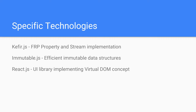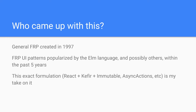The specific technologies I'm using: Kefir is the FRP library, Immutable.js is for data structures, and React is for the UI. FRP was first named and created in 1997 and was originally used for animations. Using it for UIs, particularly web UIs, was popularized by Elm and possibly others, and that's happened pretty recently — the last couple of years it's been picking up steam. This exact way of doing it with these three libraries, and some of the terminology like 'async action', is stuff I came up with. So if you try to use someone else's FRP implementation, some terms won't match up one-to-one.